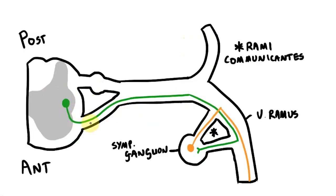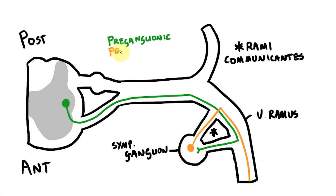So now we can see two things. First, our sympathetic efferent supply consists of two groups of fibres. Fibres that pass from the spinal cord to the ganglion are preganglionic fibres. Fibres that pass from the ganglion into the body are postganglionic fibres.